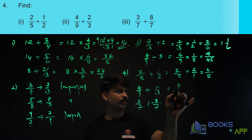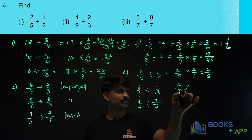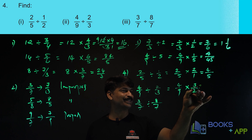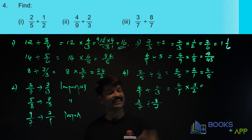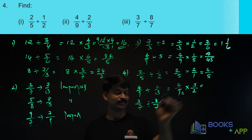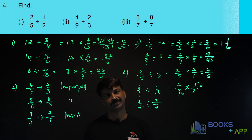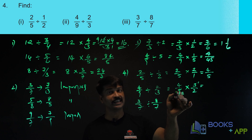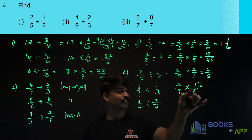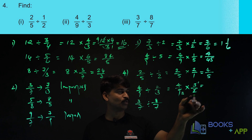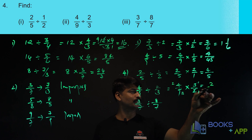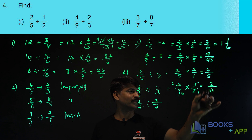Now how will you solve 4 by 9 divided by 2 by 3? Division becomes multiplication, but you take the reciprocal of 2 by 3, that is 3 by 2. Then 3 and 9 can get cancelled — 9 divided by 3 is 3, and 3 divided by 3 is 1. You can also divide 2 and 4 by 2: 2 by 2 is 1, 4 by 2 is 2. So the answer is 2 into 1 over 3 into 1, which is 2 by 3.